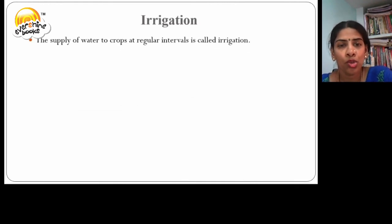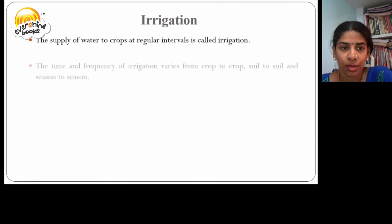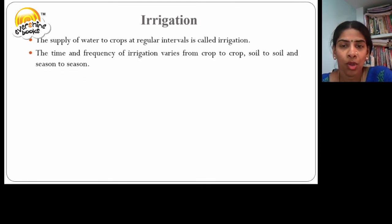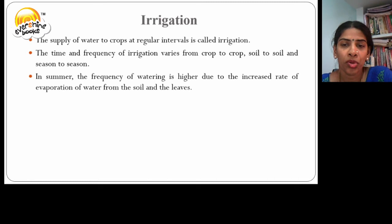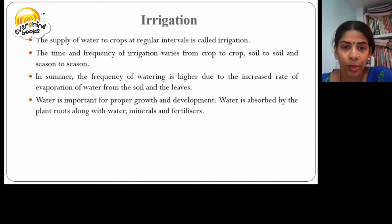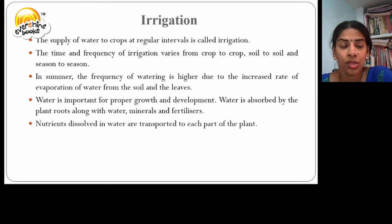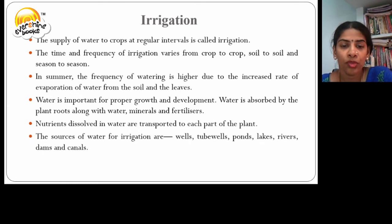Irrigation. The supply of water to crops at regular intervals is called irrigation. The time and the frequency of irrigation varies from crop to crop, soil to soil and season to season. In summer, the frequency of watering is higher due to increased rate of evaporation of water from the soil and the leaves. Water is important for proper growth and development. Water is absorbed by the plant roots along with minerals and fertilizers, and nutrients dissolved in water are transported to each part of the plant. The sources of water for irrigation include wells, tube wells, ponds, lakes, rivers, dams and canals.